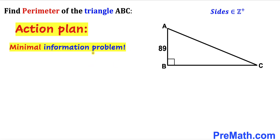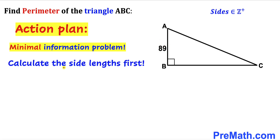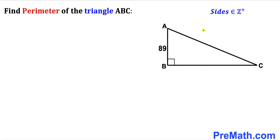Let's get started. Here's our action plan: since we are dealing with this minimal information problem, we don't know side length AC and side length BC. The only thing known to us is 89. So we must calculate side lengths AC and BC before we calculate the perimeter. Keep in mind that the side lengths must be positive integers. Let me go ahead and label the side lengths of right triangle ABC.